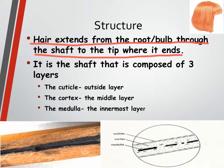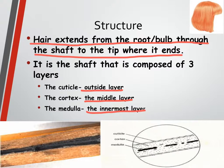Everything between the tip and the root is called the shaft. Your shaft is made up of three layers: the cuticle, which is the outermost layer; the cortex, which is the middle layer; and the medulla, which is actually in the very center. So the shaft has three layers — the cuticle on the outside, the medulla in the very middle, and the cortex around the medulla. I like to think of it almost like a pencil.